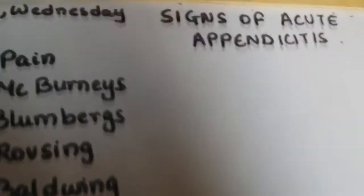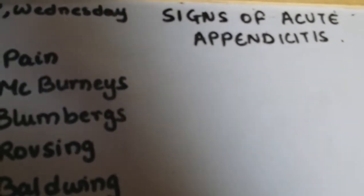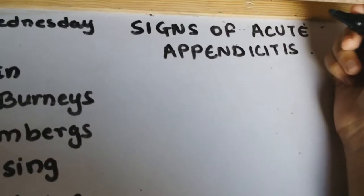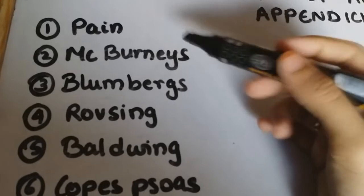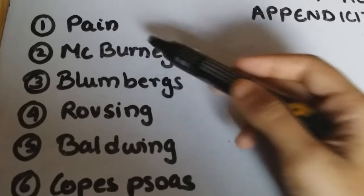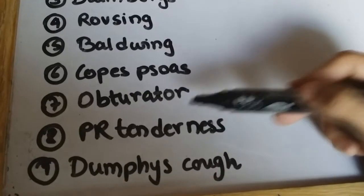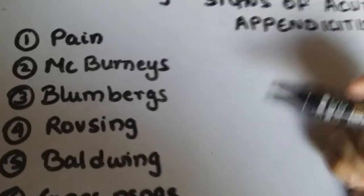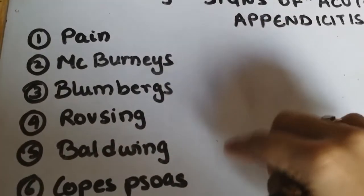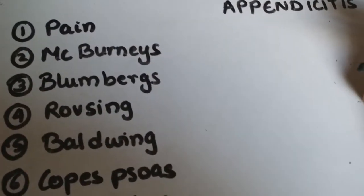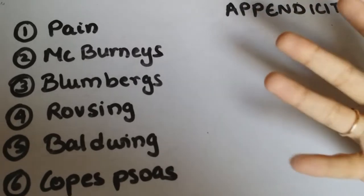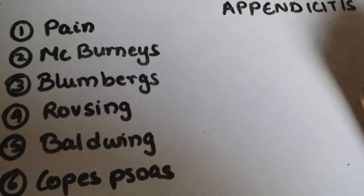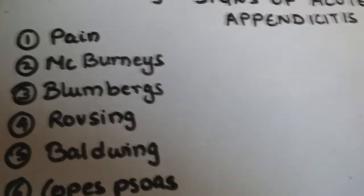Hi everyone. In this video I'm going to be talking about signs in acute appendicitis. Acute appendicitis is basically inflammation of the appendix. The signs I'm going to cover are: the type of pain you experience, McBurnie's sign, Bloomberg's sign, Rovsing's sign, Baldwing's sign, Cope's psoas and obturator test, and Dunphy's sign. These signs have a lot of names that are hard to remember, so I'm going to share my memory aids.